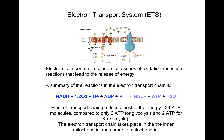So what is the electron transport system? It is also called the electron transport chain. It consists of a series of oxidation-reduction reactions that ultimately leads to the release of energy. The summary reaction is: NADH + ½O₂ + H⁺ + ADP + Pi → NAD⁺ + ATP + water. The electron transport chain produces most of the energy — 34 molecules of ATP — compared to only 2 ATP for glycolysis and 2 ATP for the Krebs cycle.